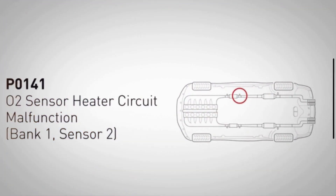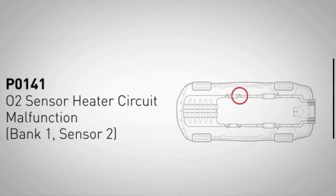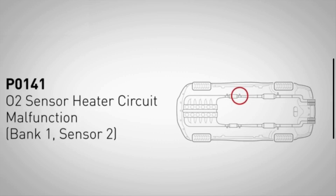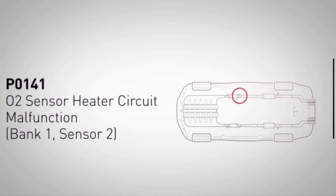The PO-141 engine code typically indicates an issue with the oxygen sensor, specifically the Bank 1 Sensor 2 oxygen sensor. This sensor monitors the oxygen levels in the exhaust gases after they have passed through the catalytic converter.